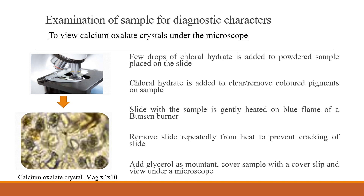To examine the diagnostic characters present in a given powder sample — for example, to view calcium oxalate crystals under the microscope — a small quantity of powdered sample is placed on a glass slide, and a few drops of chloral hydrate are added. The chloral hydrate serves as a clearing agent as it dissolves cell contents such as proteins, starch, chlorophyll, resins, and volatile oils, but it does not dissolve calcium oxalate crystals.